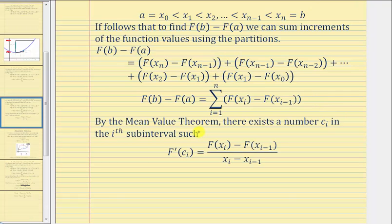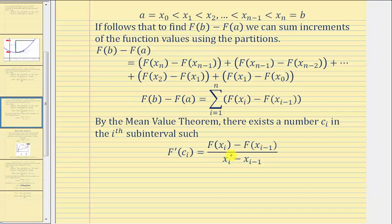Now by the mean value theorem, there exists a number c sub i in the i-th sub interval such that big F prime of c sub i is equal to the quotient of these two differences, which remember would give us the slope of a secant line over one partition. So this is telling us there's one x value within each sub interval where the slope of the tangent line, big F prime of c sub i, would be equal to the slope of the secant line passing through the two end points of the closed interval.